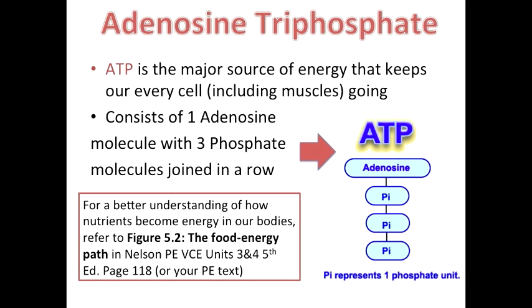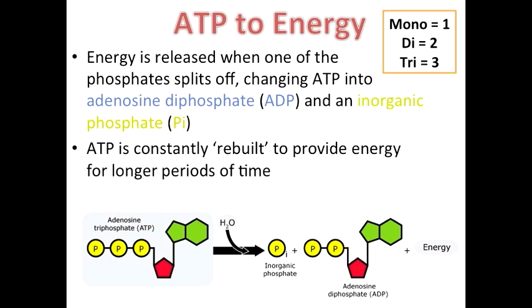This energy comes in the form of adenosine triphosphate, ATP. It keeps all of our cells, including muscles, going and consists of one adenosine molecule and three phosphate molecules. To gain energy from ATP, a phosphate molecule splits off, turning it into adenosine diphosphate, ADP, and an inorganic phosphate. An easy way to remember this is the chemical prefixes mono, di, tri.